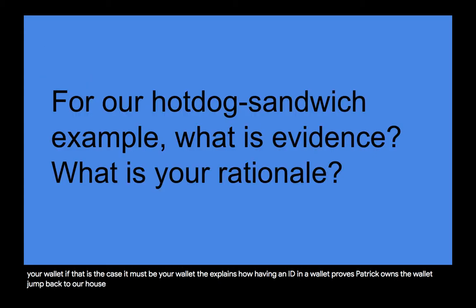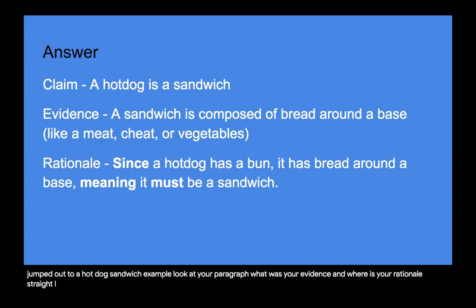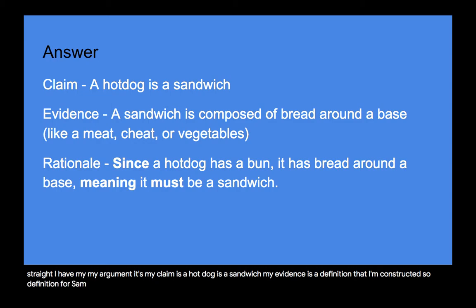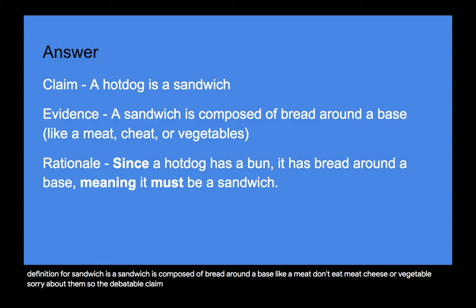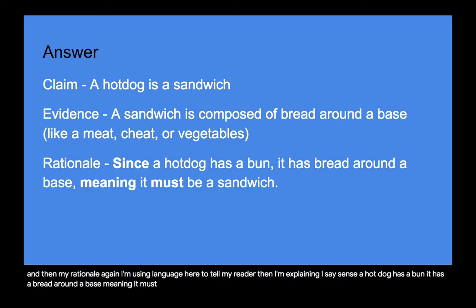We're going to jump back to the hot dog sandwich example again. My claim is: a hot dog is a sandwich. My evidence is a definition I've constructed — a sandwich is composed of bread around a base, like a meat, cheese, or vegetable. I have a debatable, bias-free claim. My evidence is objective, just stating a definition. And then my rationale uses language to tell the reader I'm explaining: since a hot dog has a bun, it has bread around a base, meaning it must be a sandwich.